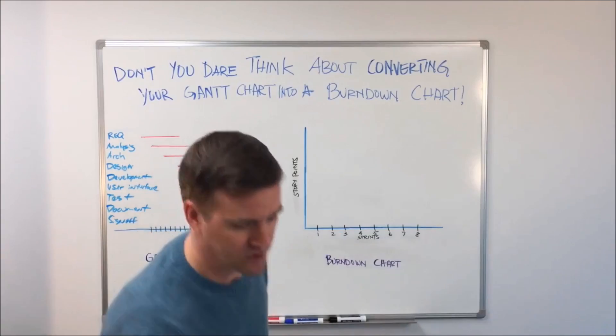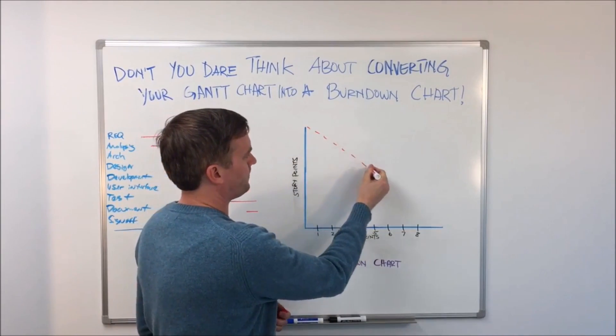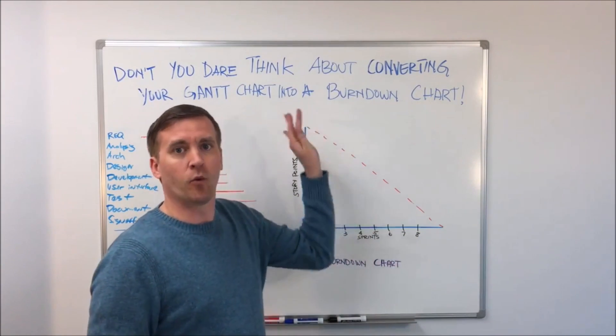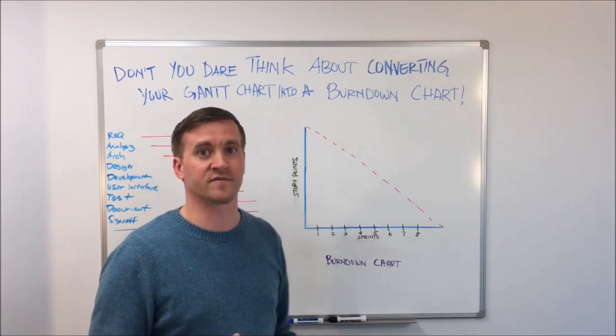Now over here we have a burndown chart. The way burndown charts work is over a certain amount of sprints, we have a certain amount of work that we would like to have finished. Typically that amount of work is measured in units of story points.